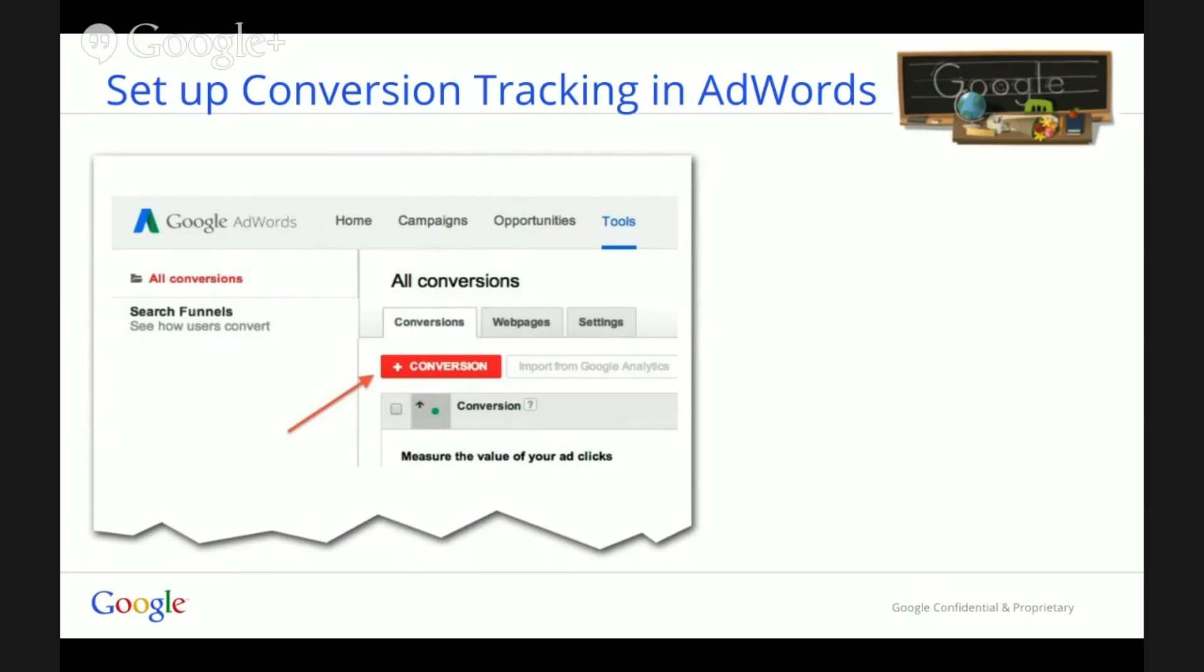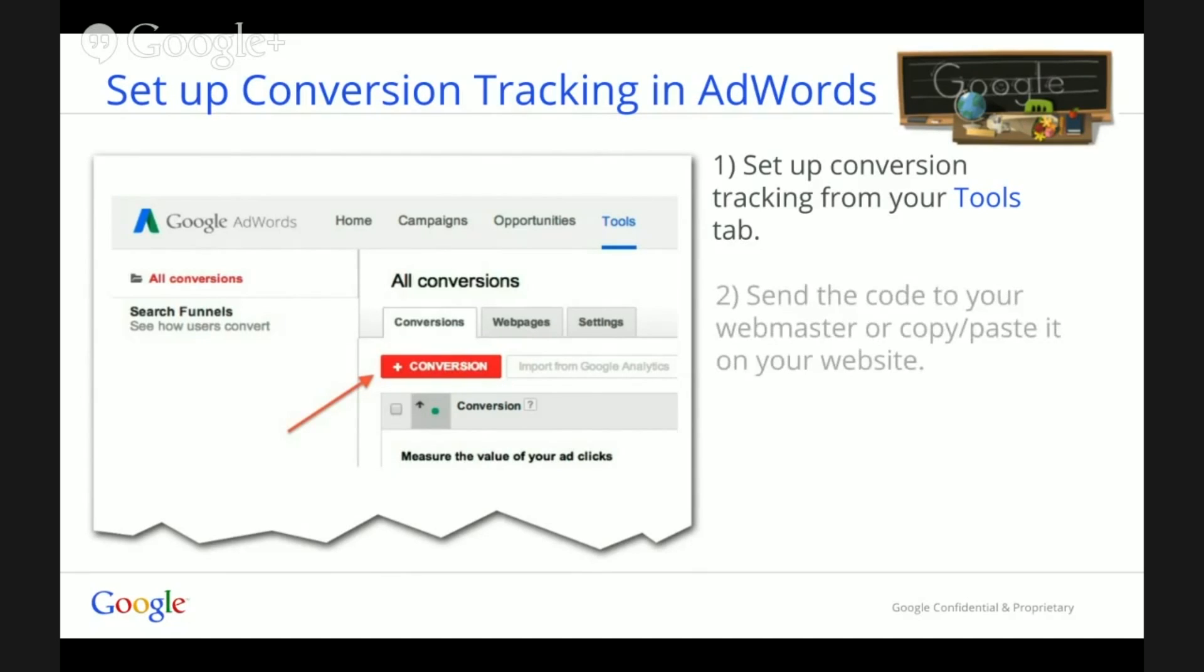One is set up conversion tracking in AdWords. First, access your tools menu on the top of your account, click on conversions, and generate your tracking code by clicking on the red button plus conversions. Second, either copy-paste the code on your website yourself or send it to your webmaster. Make sure to paste the code on the page that represents the completion of the conversion, such as a thank you page after a form is sent or the confirmation page for an order. And third, the only thing you're left to do is monitor the success of your campaign.